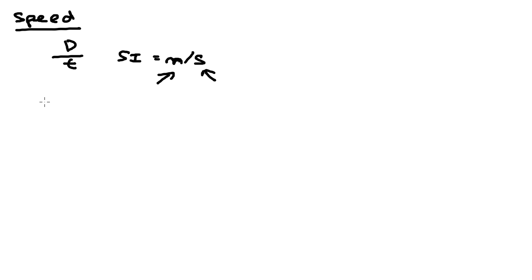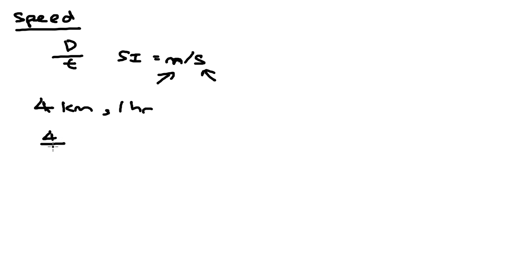How do we calculate speed? Let's do an example. Let's say the average distance travelled by a train is 4 kilometers, and it took 1 hour to travel that distance. We want to find the average speed of that train. All you have to do is 4 divided by 1 — 4 kilometers divided by 1 hour — so you get the answer 4 kilometers per hour.